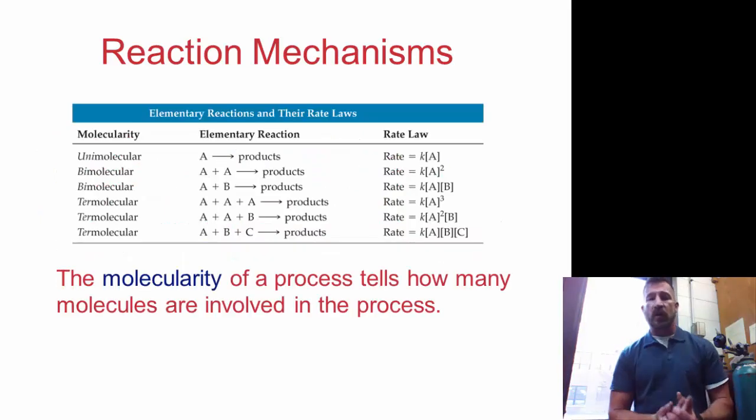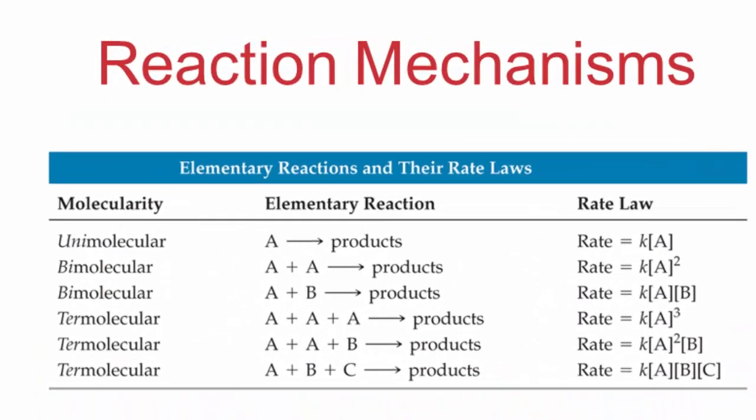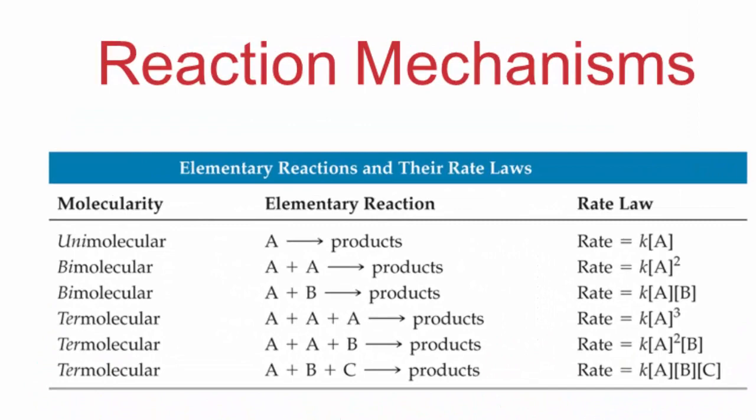Reactions can be either unimolecular, bimolecular, or termolecular. Unimolecular is simply a decomposition reaction. That's when one substance breaks down, and so the rate law for a unimolecular reaction would be rate equals k times [A]. Now one thing to notice about this: this is for the step of the mechanism. We can never write a rate law from the overall reaction, but we do and can exactly write the rate law from the slow step of the mechanism. So each of these would represent the slow step of the mechanism.